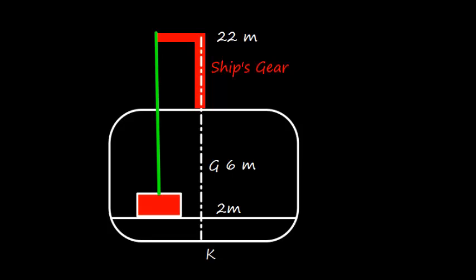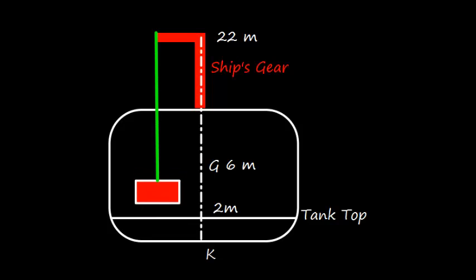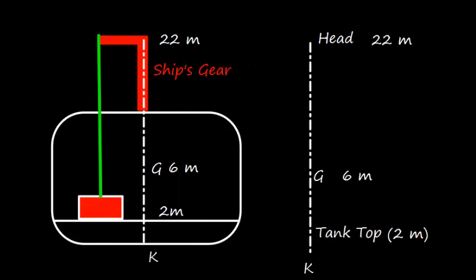Now let us understand this with some numbers — very simplified numbers. Suppose the tank top distance from keel is 2 meters. The center of gravity is 6 meters from keel, and the head of the ship's gear is 22 meters from keel. We can simplify this by drawing a straight line where K represents the keel, G is the center of gravity. So this is 2 meters, this is 6 meters, and 22 meters.